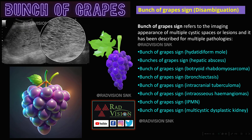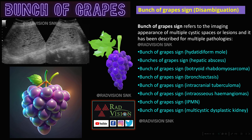This is the classic bunch of grapes appearance or bunch of grapes sign. There are multiple cystic foci noted within the uterus in this UPT-positive case — a complete molar pregnancy — where multiple cystic foci scattered throughout the endometrial cavity mimic a bunch of grapes. This sign is classically seen in hydatidiform mole, and can also be seen in hepatic abscesses, botryoid rhabdomyosarcoma, bronchiectasis, intracranial tuberculoma, intraosseous hemangiomas, intraductal papillary mucinous neoplasm, and multicystic dysplastic kidney.